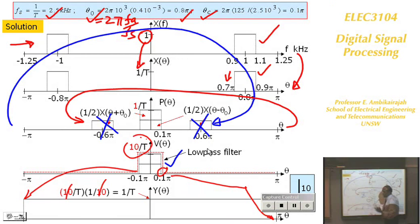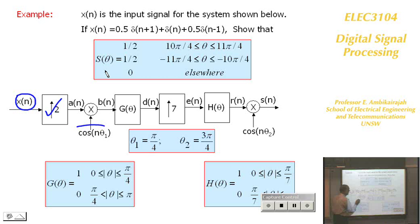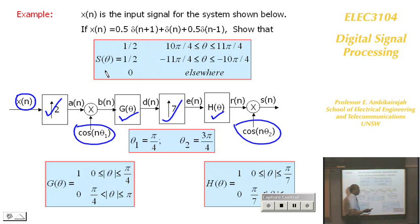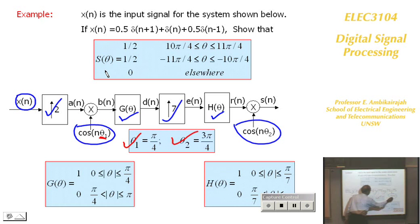That completes a portion of a multirate system example. Here is another, more complex multirate example: the signal is upsampled by 2, modulated with frequency θ₁, passed through filter Dθ, then upsampled by 7, passed through filter Hθ, then modulated again — a very complex chain.